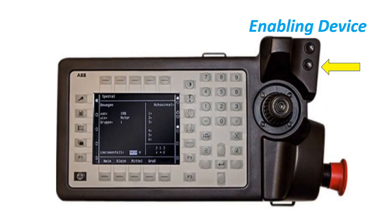Enabling Device for Safe Operation: when the enabling device is released or pushed all the way in, the guard stop will be activated, meaning the motor is off. To activate the enabling device, press it halfway and the motor will turn on.